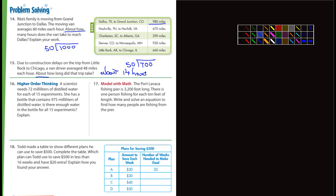Let's see here, number 16. The scientist needs 72 milliliters of distilled water for each of the 15 experiments. So my first thinking is 15 times 72. She has a bottle that contains 975 milliliters of distilled water. Is there enough water for all 15 experiments? Well, 72 times 15 equals, you'll have to figure that out. If that number is less than 972, the answer is no, she doesn't have enough water.